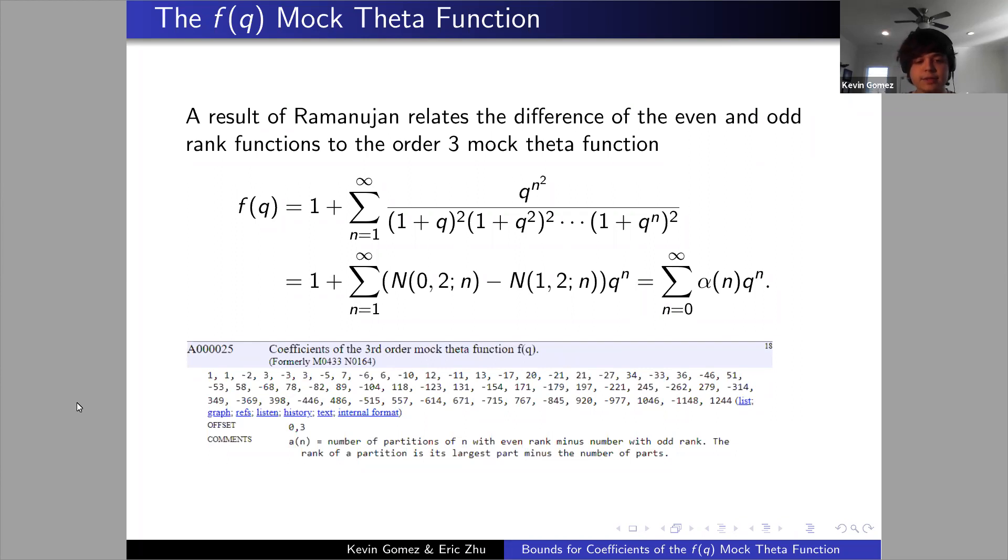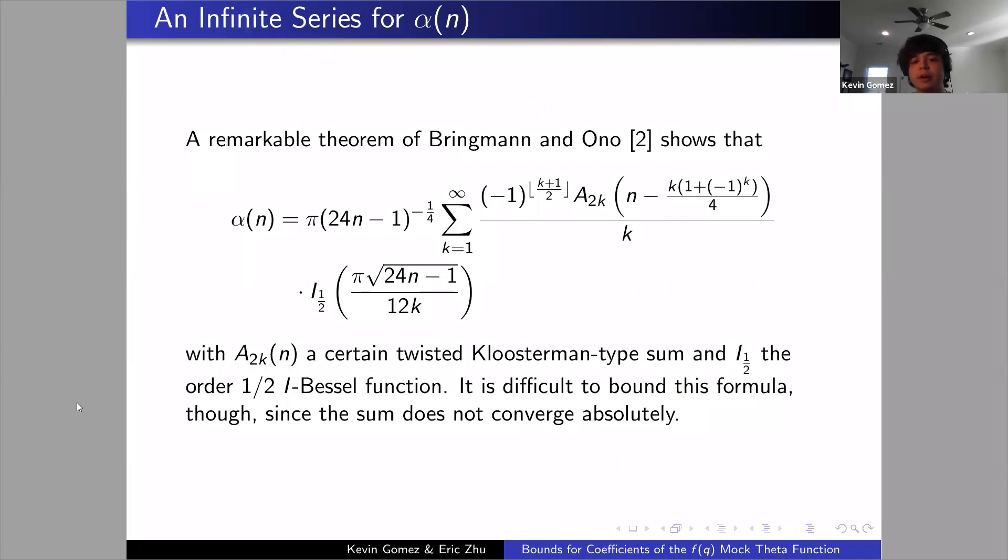As you can see, with it being such an early entry in the OEIS, this is a pretty important sequence. If we attempt to analyze alpha of n as a sequence of Fourier coefficients, we can get much better understanding of the difference between the even and odd rank functions. A remarkable theorem of Bringmann and Ono demonstrates the result you see there, which connects certain twisted Kloosterman type sums to get an exact formula for alpha of n. But this formula is not immediately useful for resolving the conjecture of Howe and Jagadeesan, primarily because it does not converge absolutely, so we do have to find another approach.